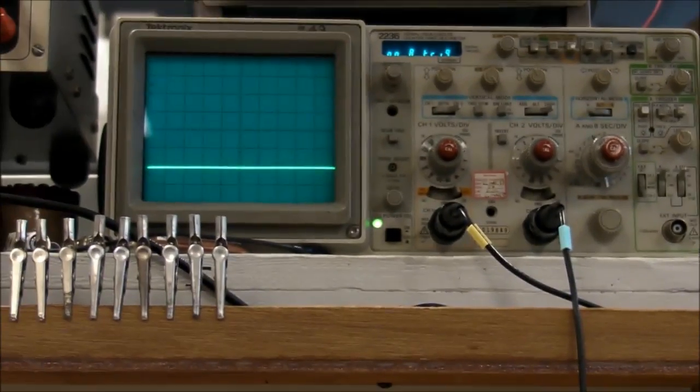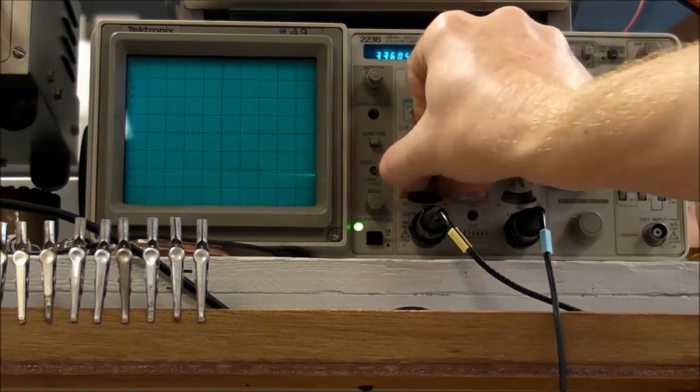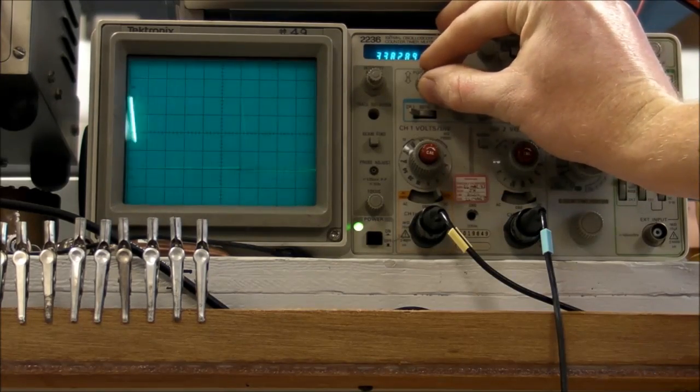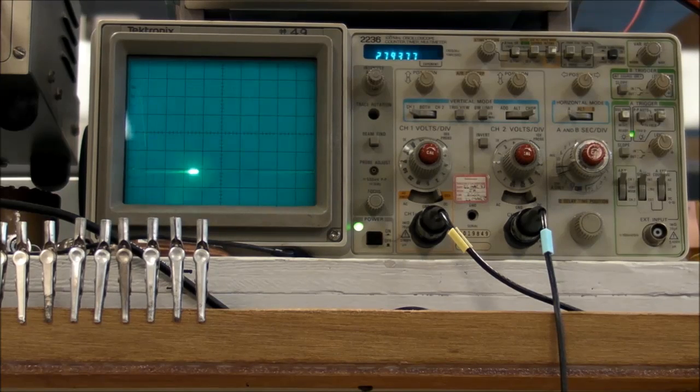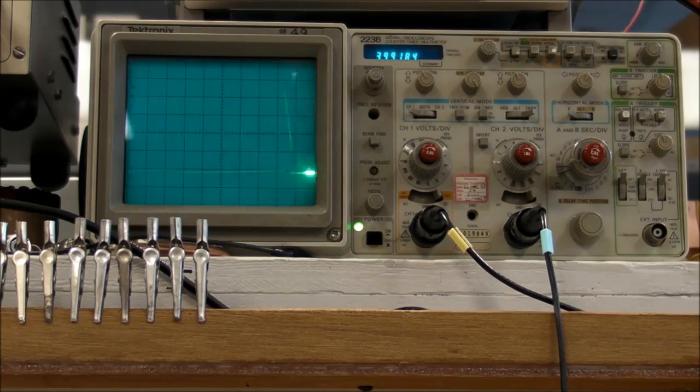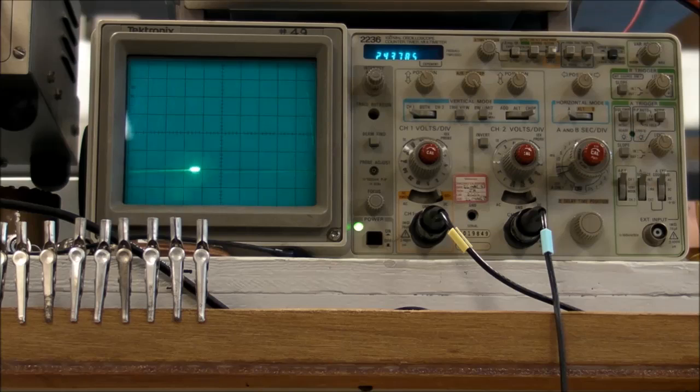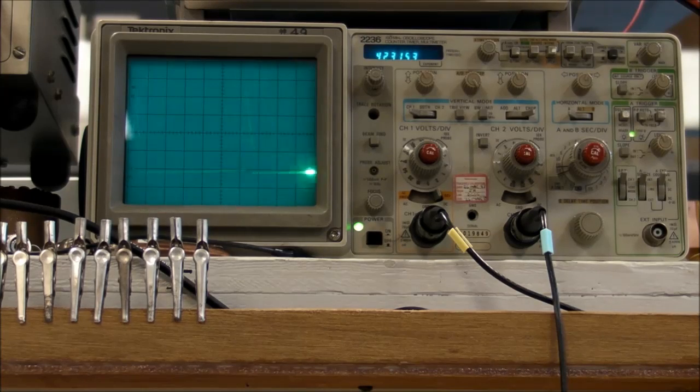And also I have a one ohm resistor and a scope probe just to measure the current through the LED. So let me switch over to that. So we're at 10 milliamps per division, and you can see how it's jumping up about four and a half divisions, so 45 milliamps at the peak.